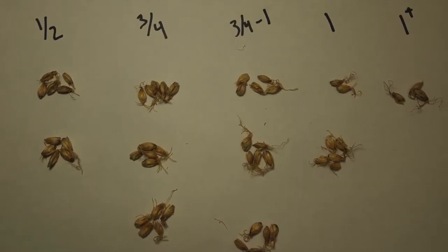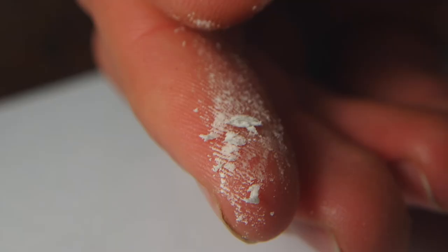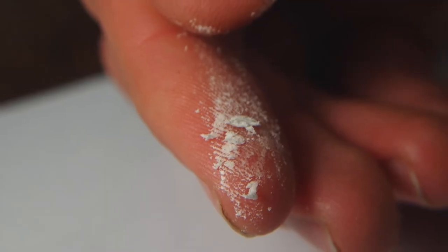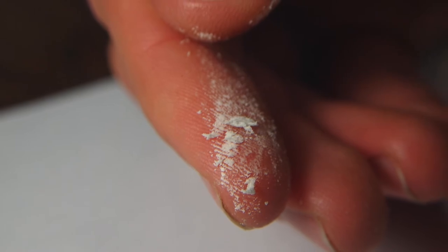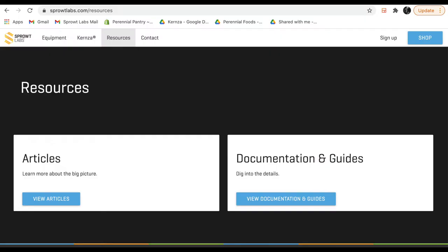Perform acrospire counts and modification tests towards the end of your germination period, three to five days typically, to determine when you'd like to stop germination and begin the drying dry-down process. You can find more literature about modification tests, acrospire counts, and completing a germination cycle on sproutlabs.com in our resources tab.